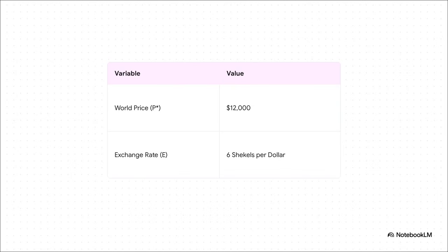So for our example, let's plug in some numbers. The car we're looking at costs $12,000 on the world market. And to keep things simple, we'll say the exchange rate is six shekels to the dollar. So you just do the quick math, that's $12,000 times six, and you get your base local price for the car: 72,000 shekels. Now remember that number, that's our starting line before anything else comes into the picture.